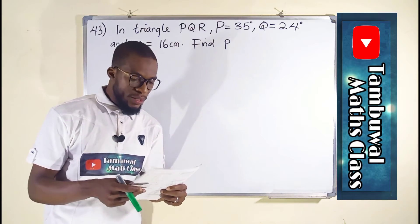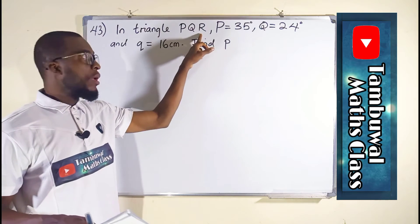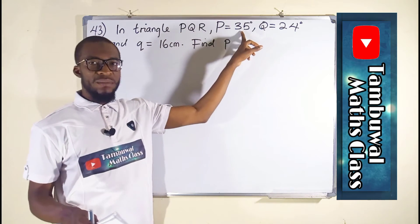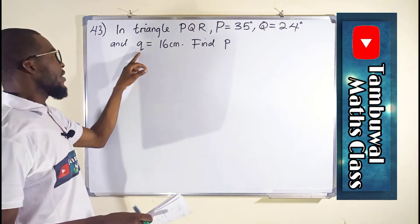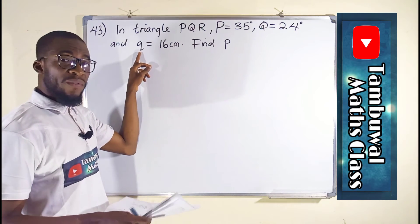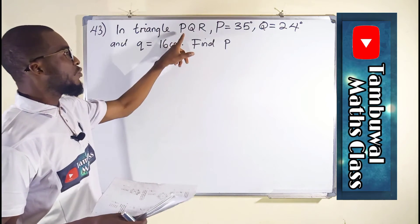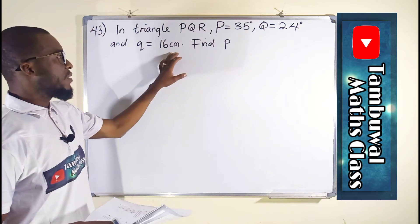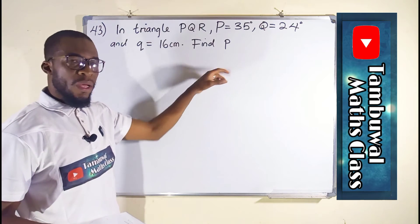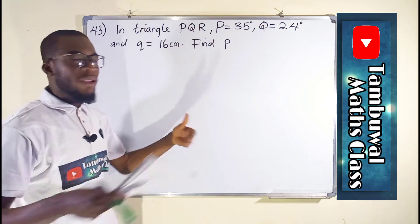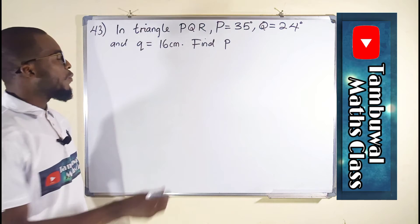Question number 43. In a triangle PQR, angle P is equal to 35 degrees, angle Q is equal to 24 degrees, and small q — referring to the line directly opposite to angle Q — is 16 centimeters. We are asked to find small p, which is the line opposite to angle P. Let's make a sketch of this information.